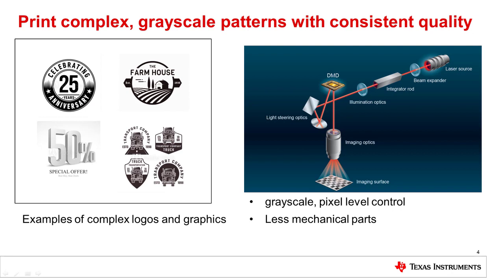DLP technology uses dynamic 2D NIR light patterns to thermally activate a substrate, imprinting an entire area in one shot rather than point by point. The digital controller for the DLP-650 LNIR allows power to be turned on and off at the pixel level, enabling preheating of the print surface and variable exposure control.